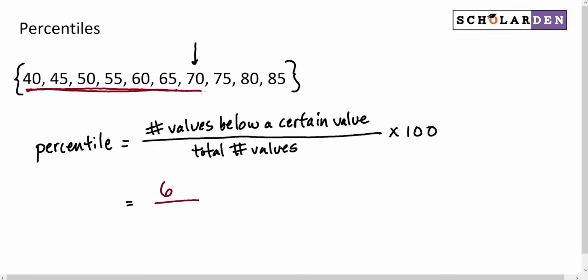Well, 6, 7, 8, 9, 10. So 6 out of 10 times 100, and we get 0.6 times 100, which is 60. So 70 is in the 60th percentile. So that's all there is to it.